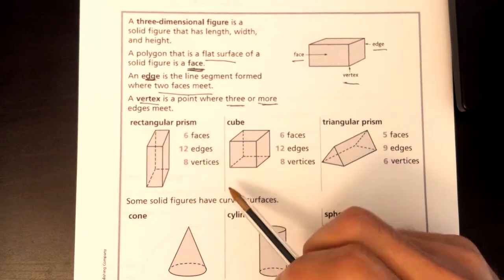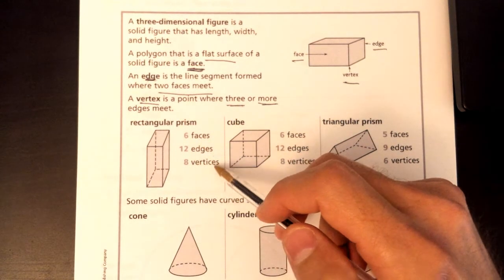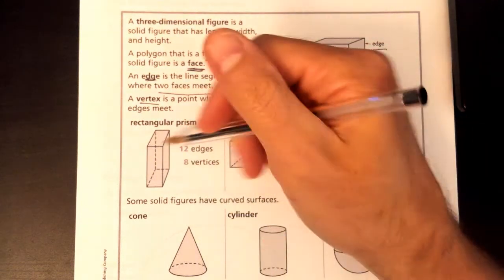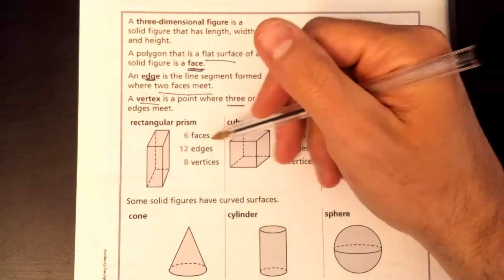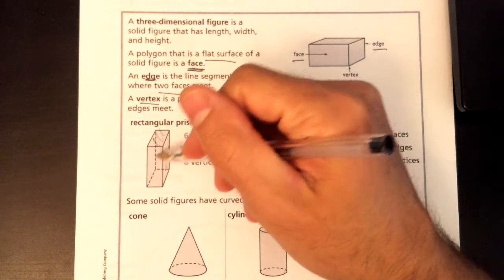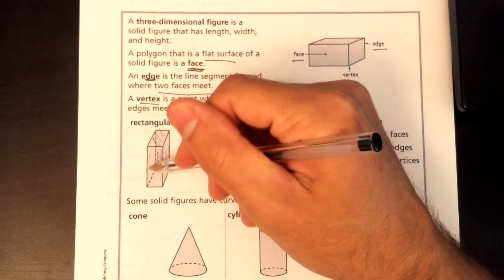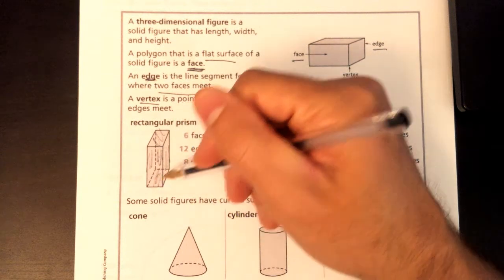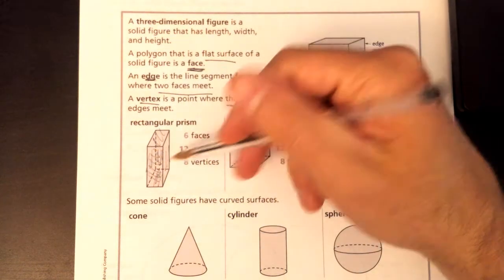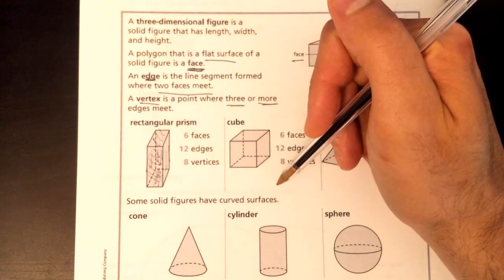Here we have a rectangular prism. We're going to check out the faces, the edges, and the vertices. Let's start with the faces: one, two, three — that's the one in the back — four, five on the bottom, and then six would be in the front. There are six faces to this rectangular prism.